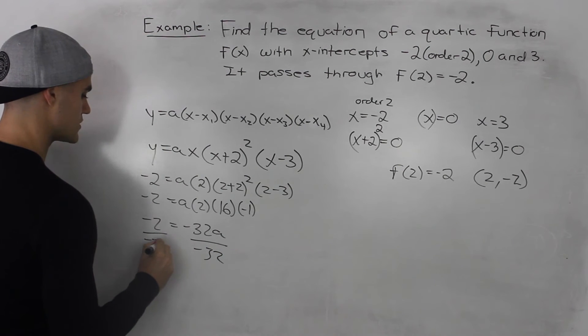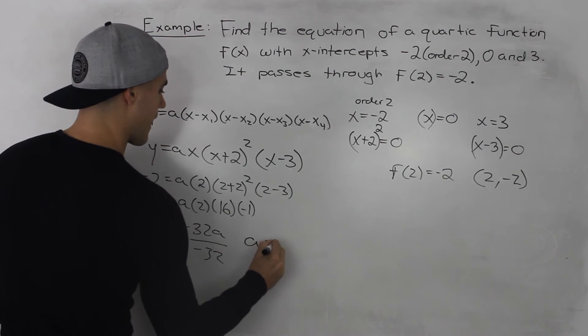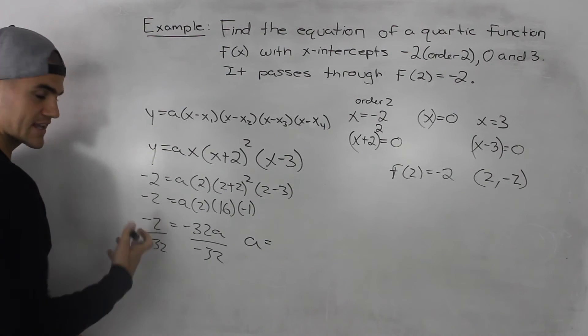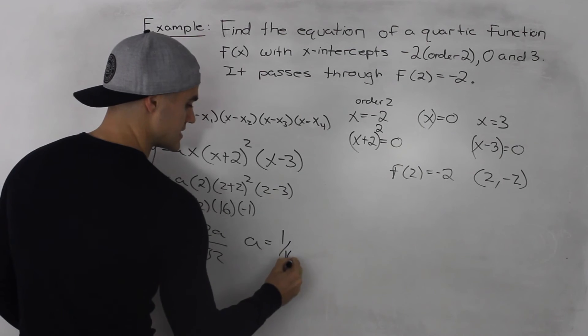Divide both sides by -32. So a would equal -2 over -32. The negatives cancel out, so we're just left with 1/16.